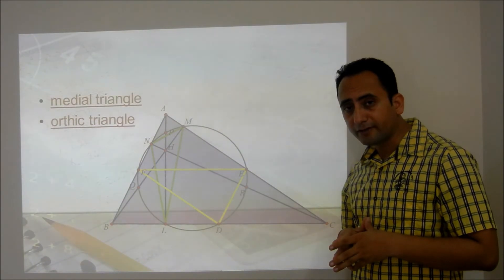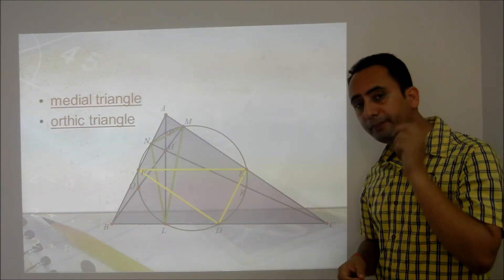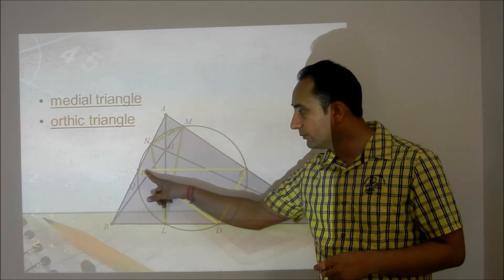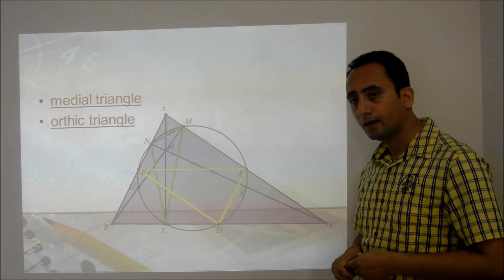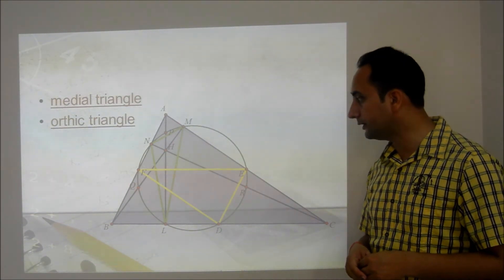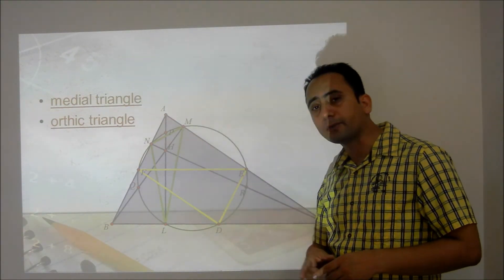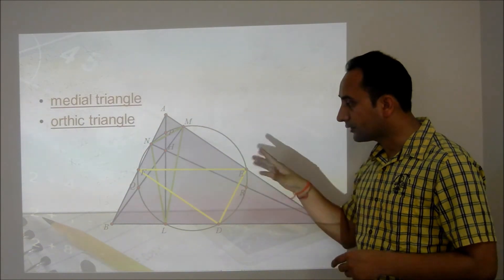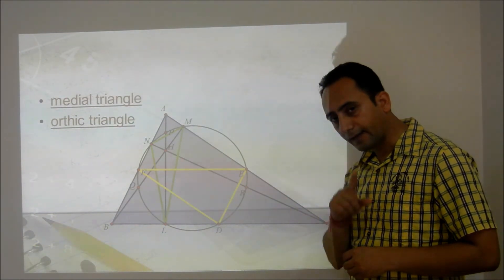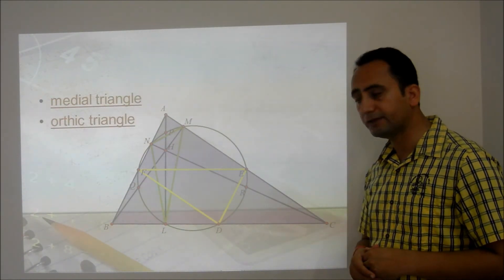Two important definitions: the medial triangle is a triangle obtained by joining the midpoints of the sides of a triangle, shown in yellow in the slide. The ortho triangle is a triangle obtained by joining the feet of the altitudes of the triangle, shown in green.